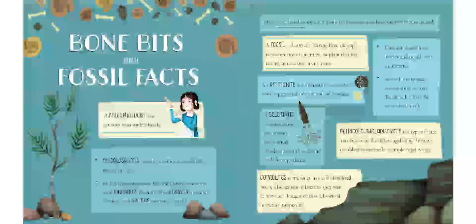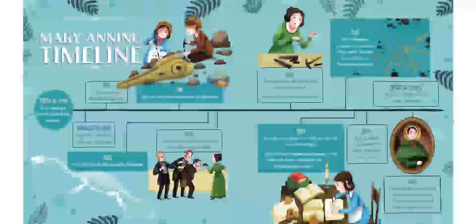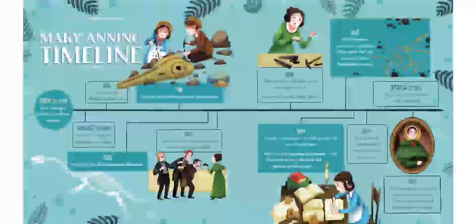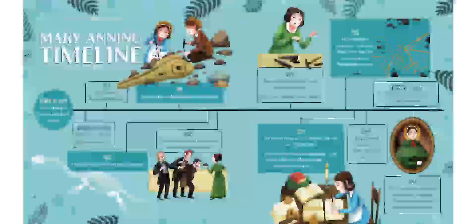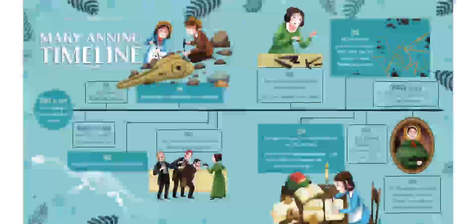Mary Anning Timeline. May 21st, 1799, Mary Anning is born in Lyme Regis, England. On August 19th, 1800, baby Mary is struck by lightning and survives. In 1810, Mary's father, Richard Anning, dies.